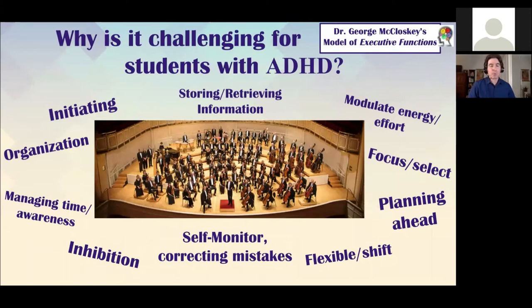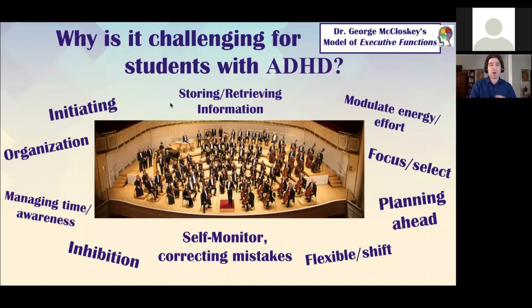The big issue with both classroom learning and this new situation are executive functions. More and more people are talking about executive functions these days. I prefer George McCloskey's model, which has 24 executive functions in tiers. I've pulled out 10 that I think are key musicians in the orchestra conducting our mind — that's the metaphor I prefer.